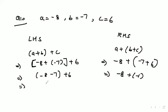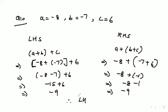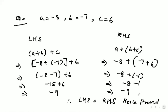In the next step, LHS gives (-15) + 6 and RHS gives -8 + (-1). This becomes -9 on both sides. So we can say LHS equals RHS — hence proved. Hope the question is clear. We put the values according to the equation given and calculate, and accordingly LHS comes out equal to RHS, which is what was asked.